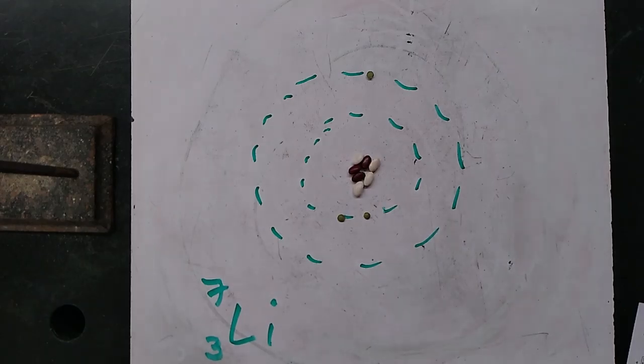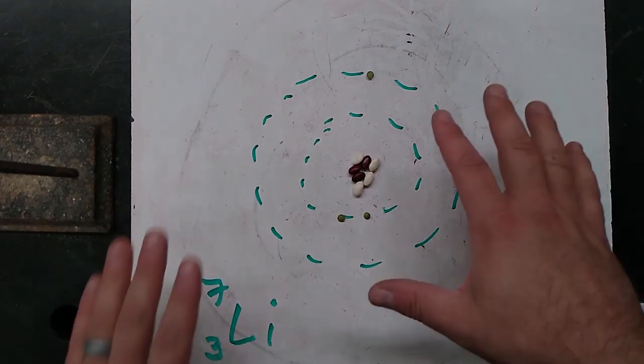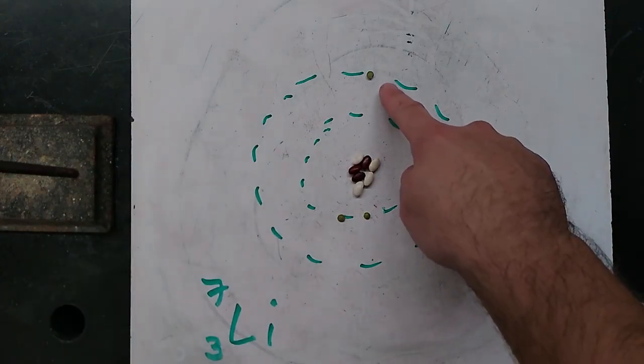Alright guys, so this is how you make a Lewis dot structure. It's like a Bohr model, only the only thing we care about is the valence electron.